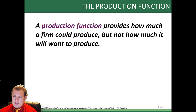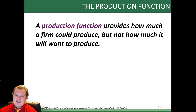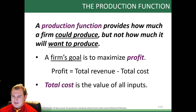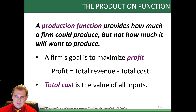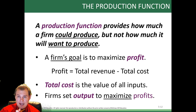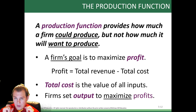The production function tells you how much a firm could produce, but not how much it will want to produce. Firms don't maximize production — they maximize profits. If that means maximizing production, they'll do that, but if it doesn't, they won't. They have one goal: profit. A firm's goal is to maximize profit. If producing that extra marginal unit is unprofitable, they don't produce it. Profit equals total revenue minus total cost. Total cost is the value of all inputs. Firms set output to maximize profit.